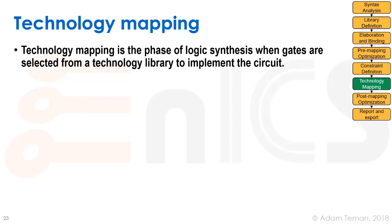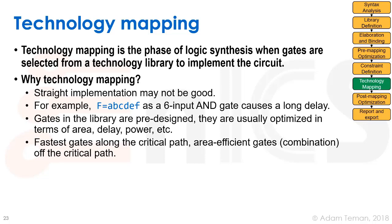Now we actually have to go to our standard cell library — the one we loaded in the library definition — and map our logic to actual standard cells. A straight implementation using generic gates may not be good. For example, a function f = a·b·c·d·e·f is a six-input AND gate, but standard cell libraries typically only have four-input gates because higher fan-in makes worse gates. We have to divide it into multiple levels using the pre-designed, optimized cells in the library.